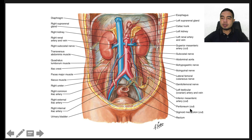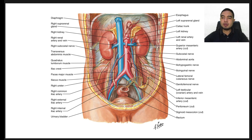These organs are located primarily in the retroperitoneum or extraperitoneal spaces. However, a transperitoneal approach may be utilized to access the kidney, ureters, bladder, or retroperitoneal lymph nodes during certain urologic operations.